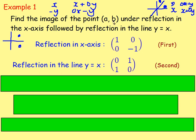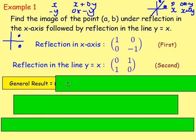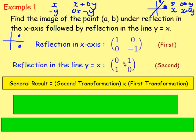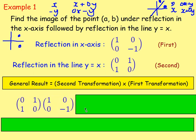The first transformation is reflection in the x-axis, and the second is reflection in y = x. To find the result, multiply the transformations in reverse order: take the second transformation [0, 1; 1, 0] and multiply it by the first transformation [1, 0; 0, −1]. These are both 2×2 matrices, so the result will also be 2×2.